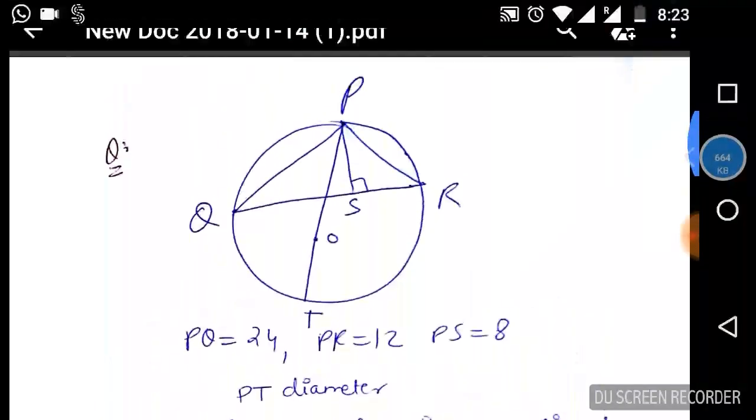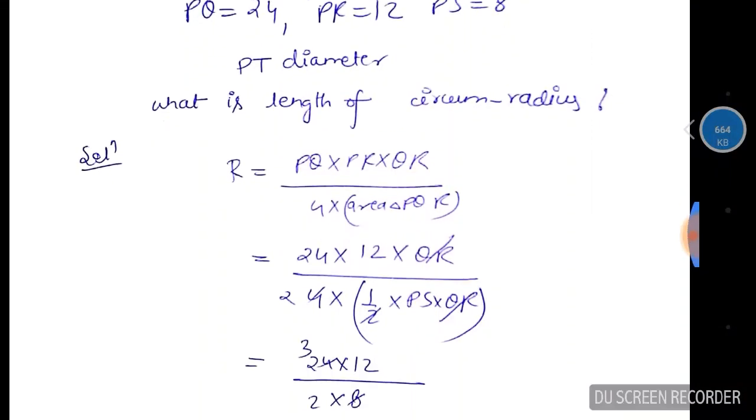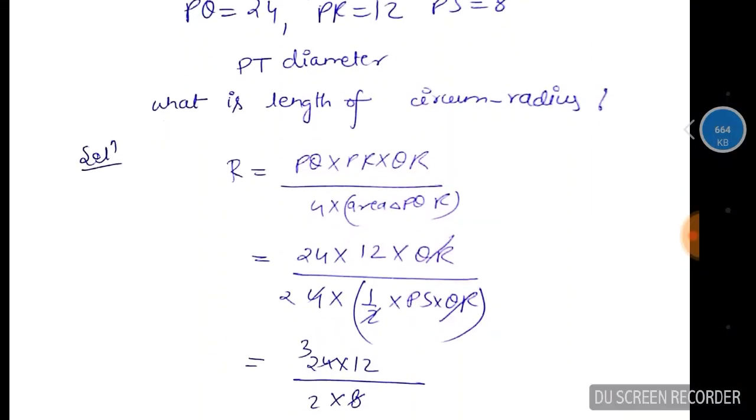I hope you have all paused the video and solved the question. Now I am telling you the answer. I have already solved so there should be no delay in explaining. The formula for circum-radius is product of all sides upon 4 into area.